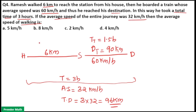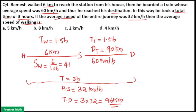Total time is 3 hours. That means time taken for the walk is also 1.5 hours. That means speed of walk is equal to distance he walked divided by time taken for the walk, that is 6 by 1.5, which is equal to 4 km per hour.